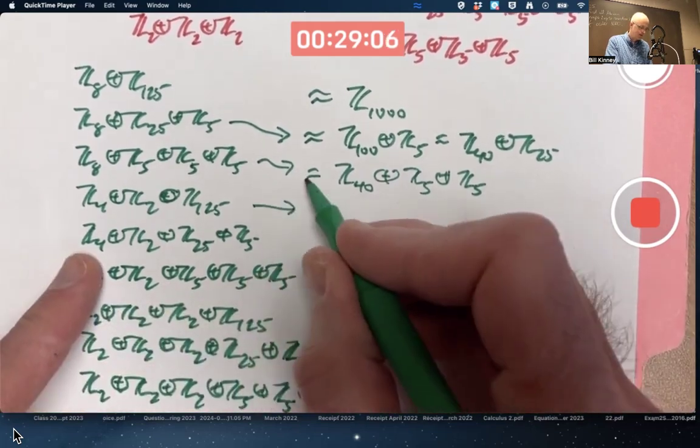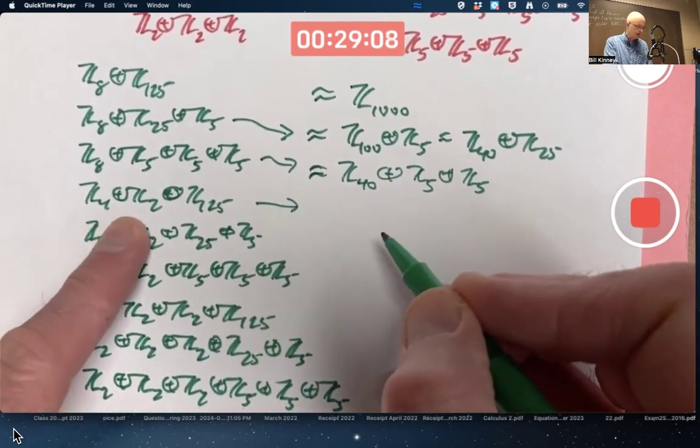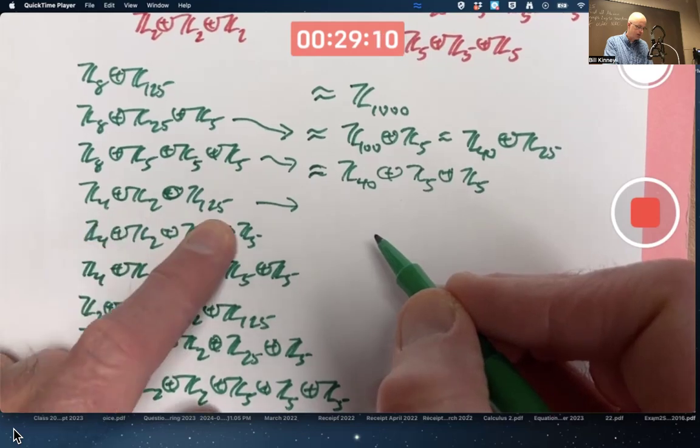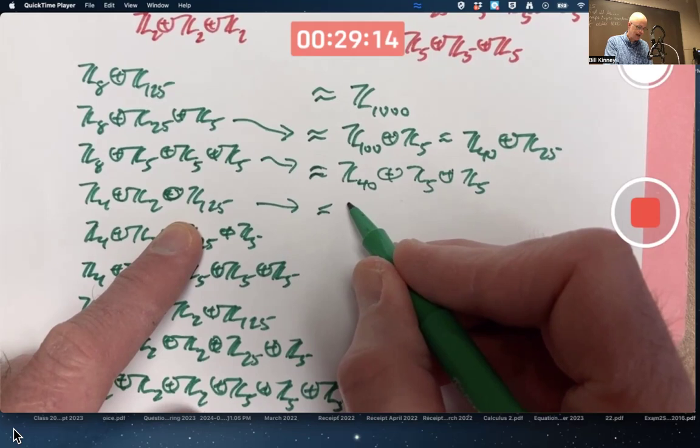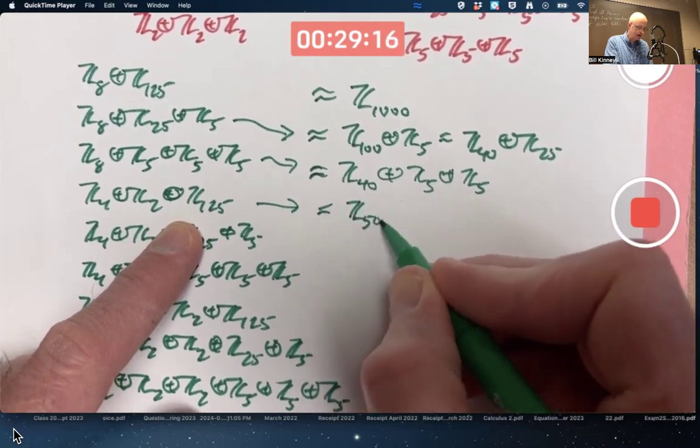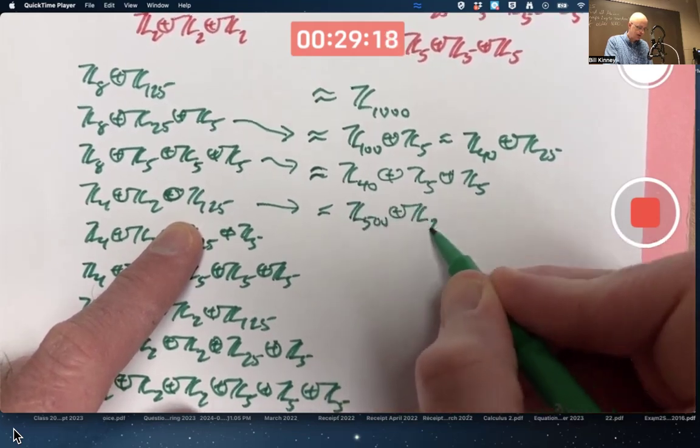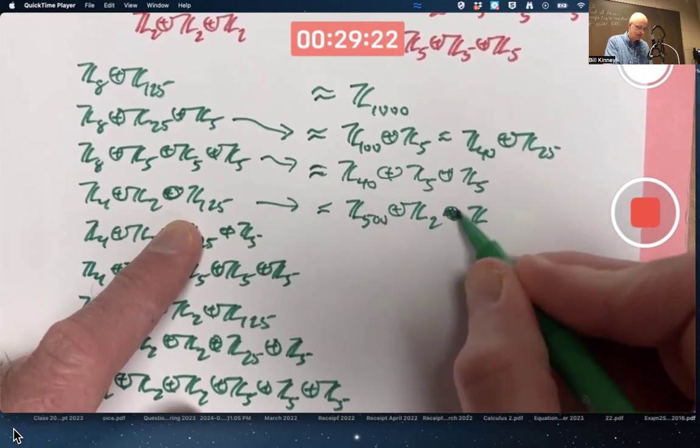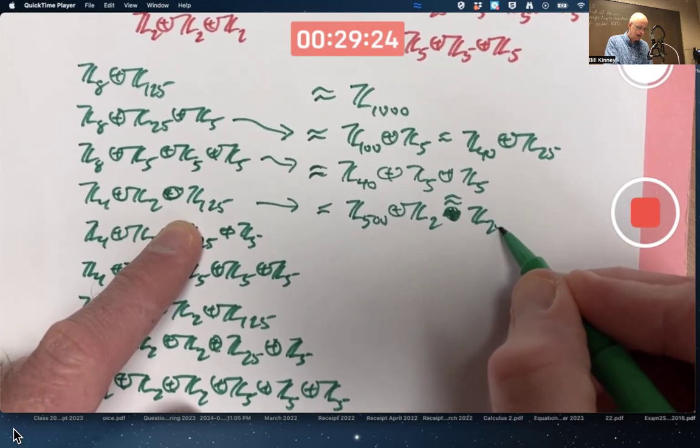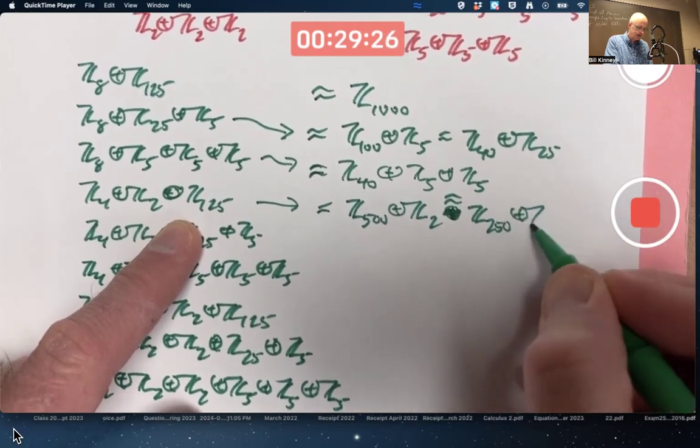With this one, don't combine the 4 and the 2, but I could combine the 4 and the 125 or the 2 and the 125. I could write this either as Z500 external direct product with Z2, or as Z250 external direct product with Z4.